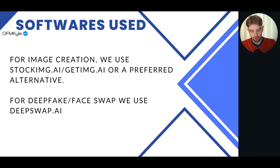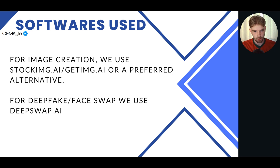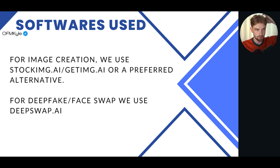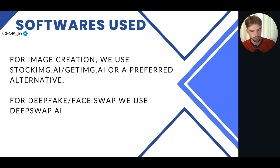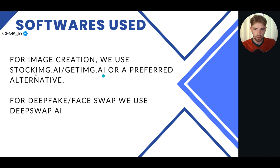So, software used: to actually create images, we use StockImage.ai, but they've had a recent update so we're still figuring stuff out — it's a huge update and we're still getting used to the platform. GetImage.ai is still very, very good as well, or whatever alternative you use. There are a lot of alternatives nowadays. For replacing the face — deepfake software — we use DeepSwap.ai. There are also a lot of apps you can use on your phone. I'm going to jump into GetImage now.